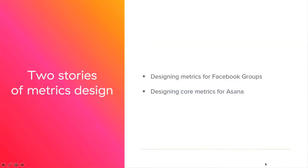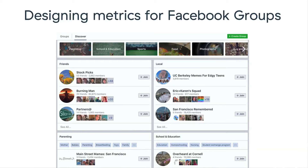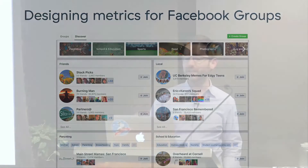With those questions in mind, I'd like to talk about two stories of metrics design: one from Facebook, where we designed new metrics for Facebook Groups, and one about the redesign of core metrics at Asana. I worked on Facebook Groups for about a year, and when I started we had some basic metrics — only minimal transformations of production data and server logs: how many members are in a group, how many posts and comments, how often is a group visited.